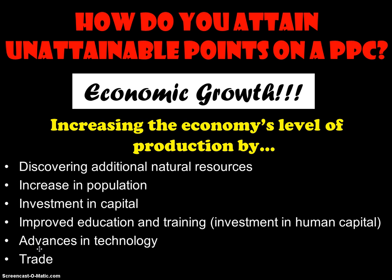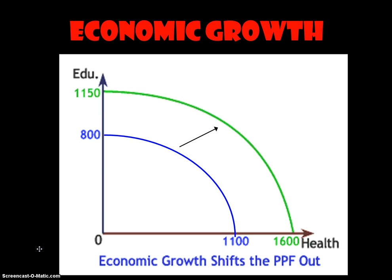How do we get the production possibilities frontier to move outward? If we want to achieve points outside our current frontier, the only way is by achieving economic growth or getting more resources — either more natural resources, more labor resources, or more capital resources. Trade is also an excellent way to get outside our current production possibility frontier. When we attain more resources, the whole curve shifts outward because with more resources, we are able to produce more of everything.